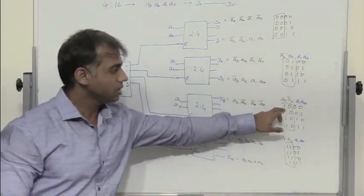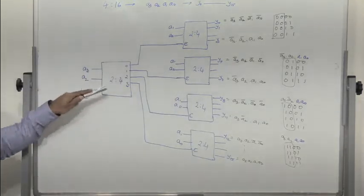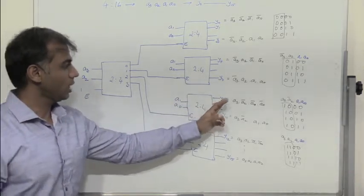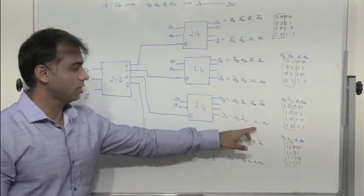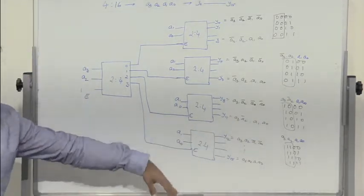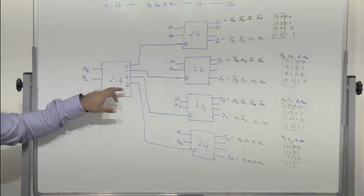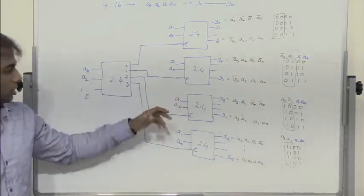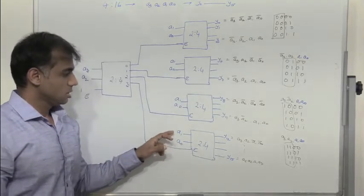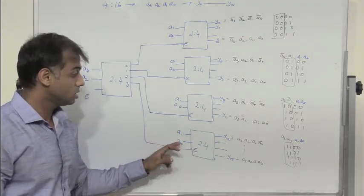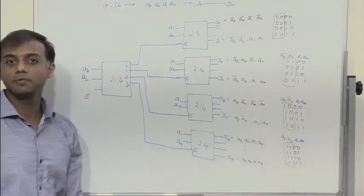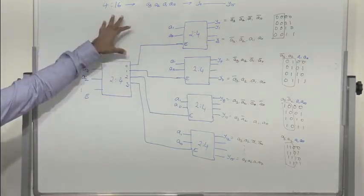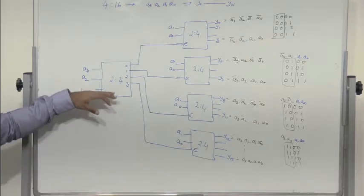When A3 is 1 and A2 is 0, line 2 is high, enabling the third decoder. So 0,0 gives Y8, and 1,1 gives Y11. For the last case, when A3 and A2 are both 1, line 3 is high, enabling the fourth decoder. Then 0,0 gives Y12, 0,1 gives Y13, 1,0 gives Y14, and 1,1 gives Y15.